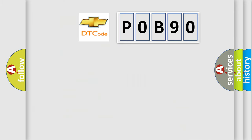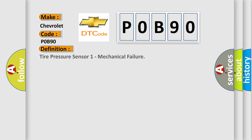So, what does the diagnostic trouble code P0B90 interpret specifically for Chevrolet? The basic definition is: Tire Pressure Sensor 1 Mechanical Failure.